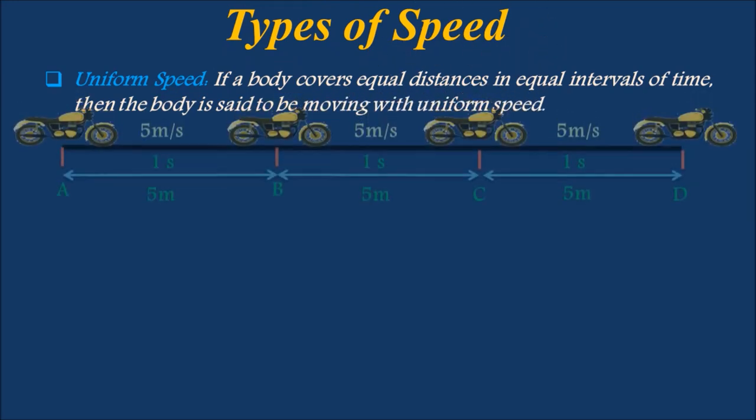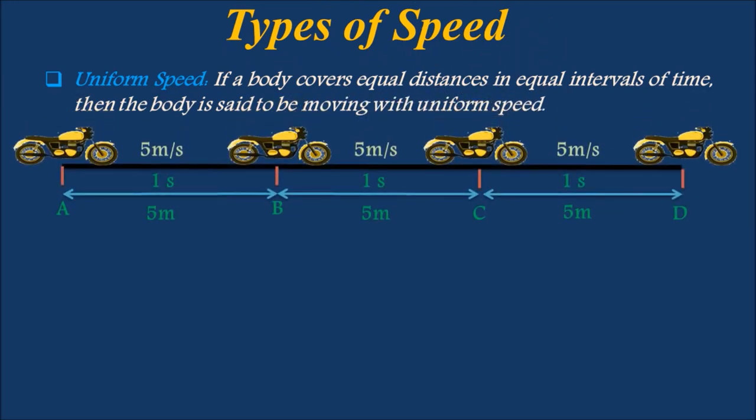Here, the bike covers equal distances of 5 meters along paths A-B, B-C, and C-D in equal intervals of 1 second. So the bike has a uniform speed of 5 meters per second along paths A-B, B-C, and C-D.